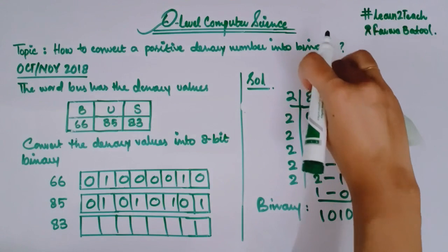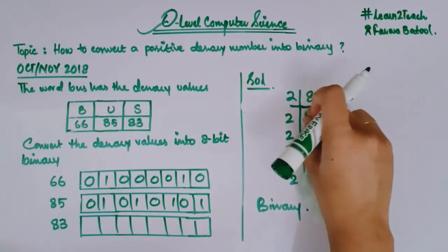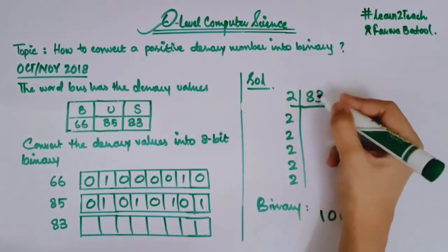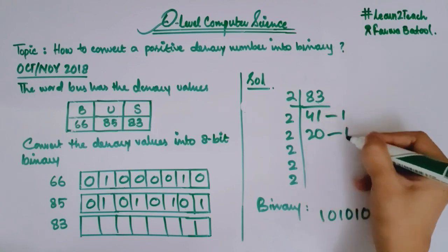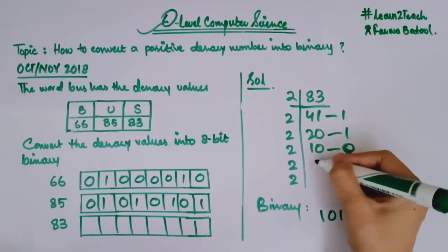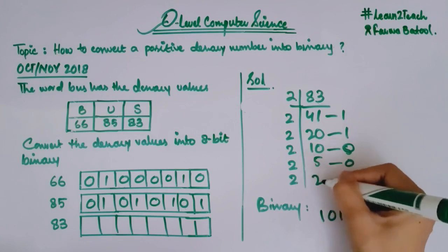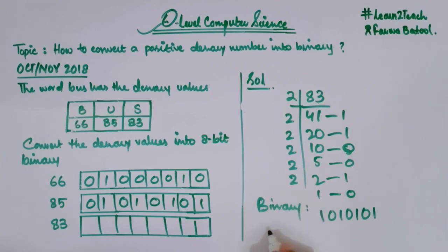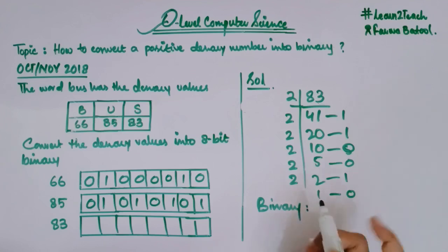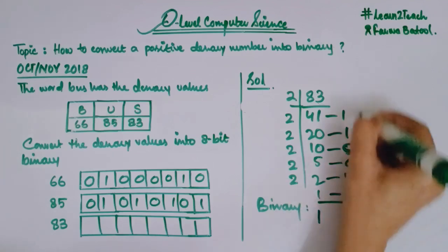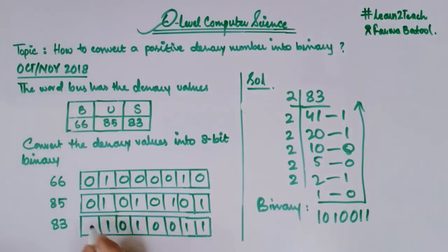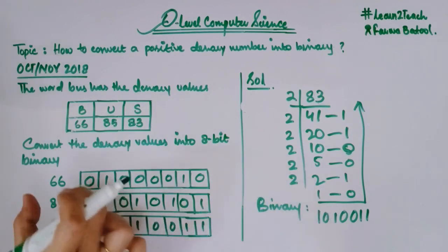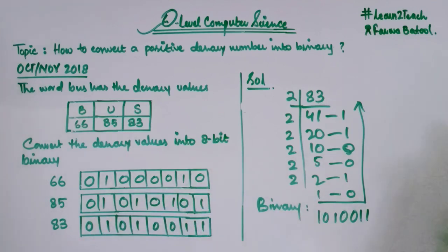Now I am going to convert 83 into binary. Dividing repeatedly by 2: 83 by 2 gives 41 remainder 1; 41 by 2 gives 20 remainder 1; 20 by 2 gives 10 remainder 0; 10 by 2 gives 5 remainder 0; 5 by 2 gives 2 remainder 1; 2 by 2 gives 1 remainder 0; remainder 1 at the end. Reading in reverse and writing into the register: 0, 1, 0, 1, 0, 0, 1, 1. The remaining position is filled with 0. This is how we have converted all three decimal values — 66, 85, and 83 — into binary data.